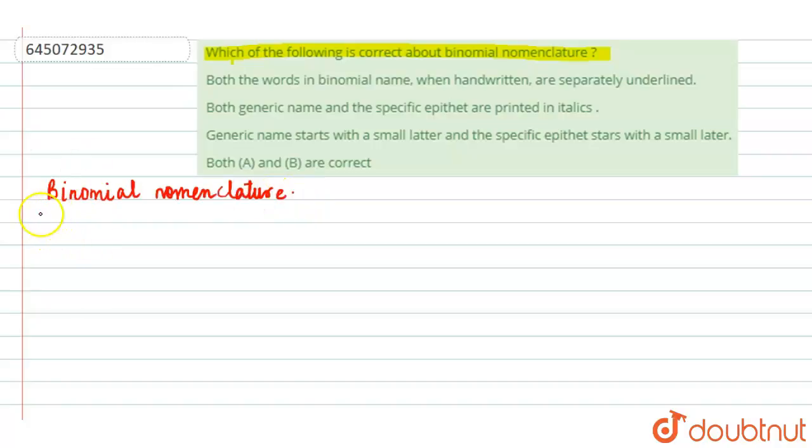Basically, binomial nomenclature consists of two words. First is the genus and the second one is the species. The first will be the generic epithet and the second will be the specific epithet.